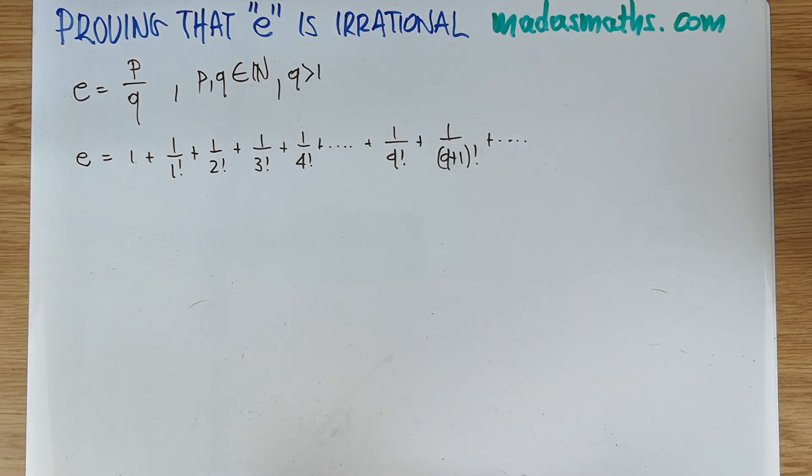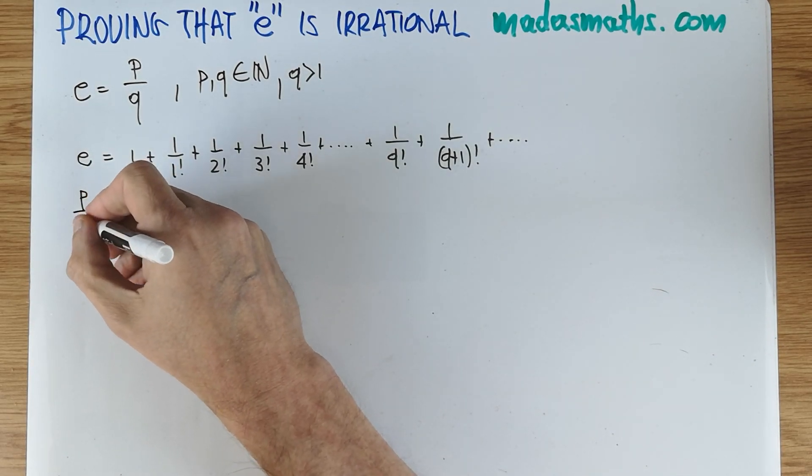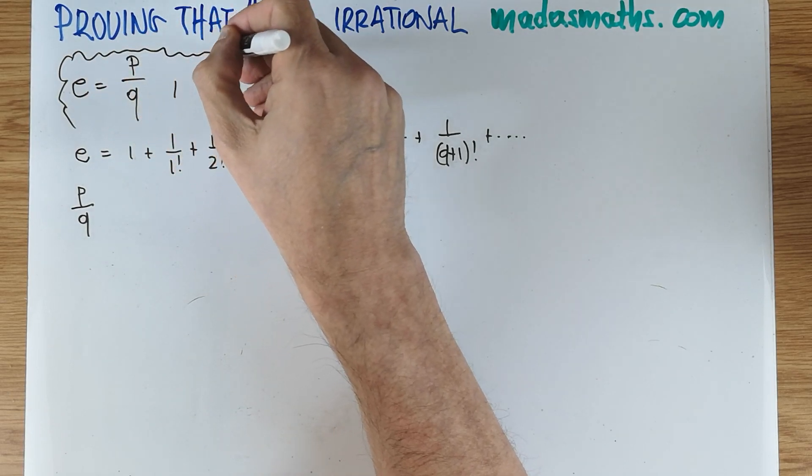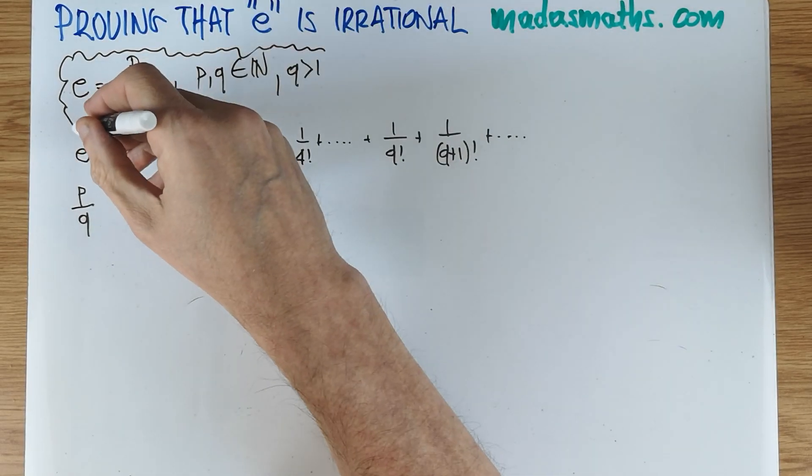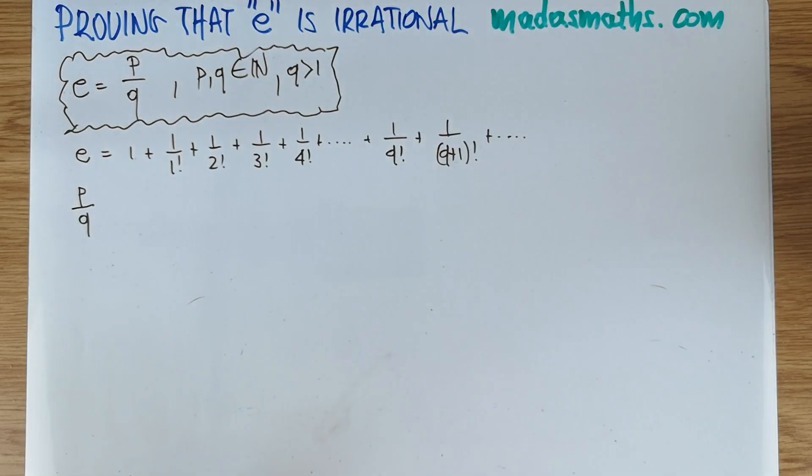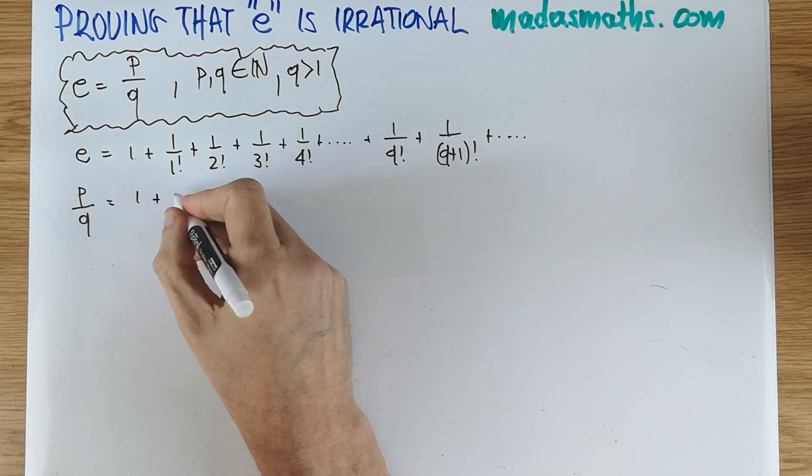And of course, since e we're claiming to be p over q, with these conditions, let's put them in a little bubble because I'm likely to rub them off stupidly halfway into the video. So p over q we can say is going to be equal to all of this thing here.